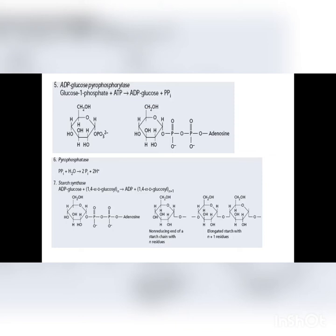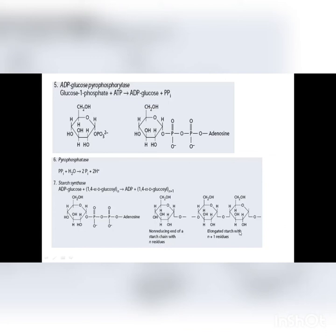ADP-glucose molecules are synthesized and then they join with the growing chain of starch at the non-reducing end to elongate the starch. This ADP-glucose is attached with the starch chain at the non-reducing end to elongate the starch. This is how starch is synthesized in the chloroplast.